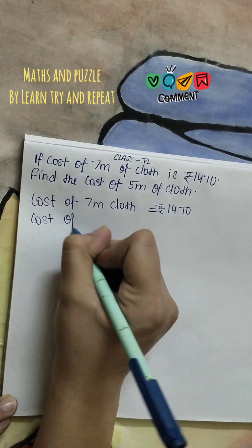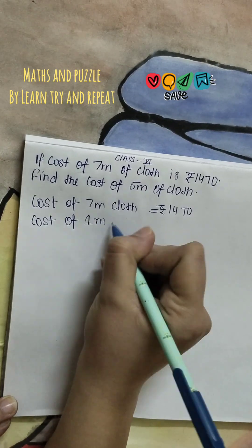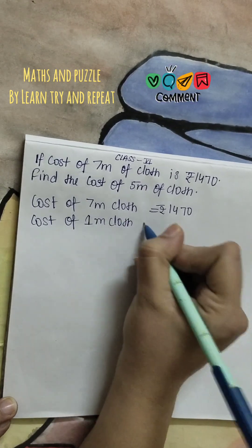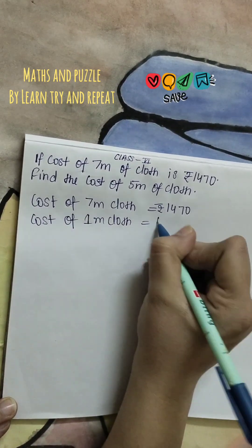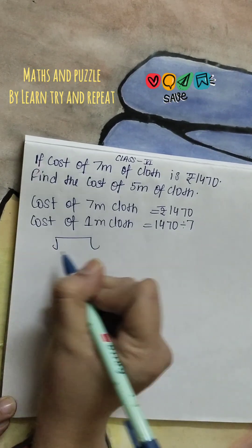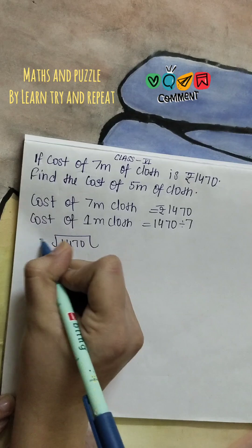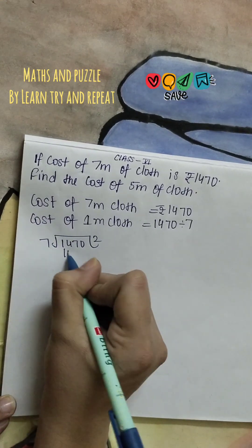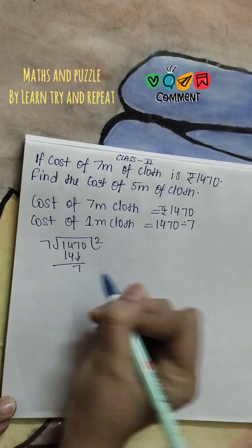We will find cost of 1 meter cloth. So cost of 1 meter cloth will be 1470 divided by 7. Now we will divide 1470 divided by 7. 7 goes into 14 twice, so we will write 7 over here.